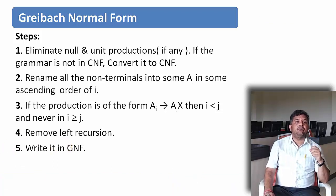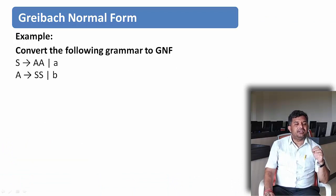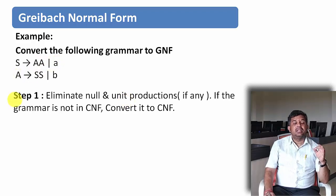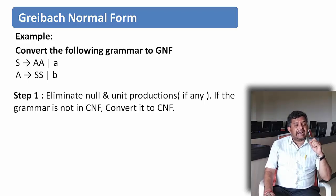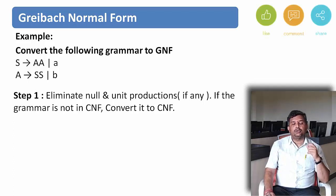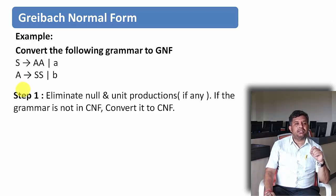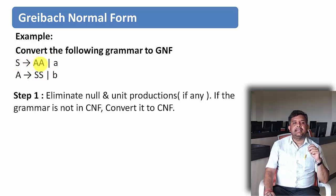Let us understand this with an example. The grammar given is: S derives AA or A, and A derives SS or B. The first step is to eliminate null or unit productions if present, and convert to Chomsky's Normal Form if needed. This grammar is already in Chomsky's Normal Form — the right-hand side contains either two non-terminals or a single terminal.